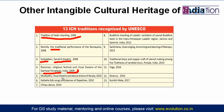Mudiyettu is a dance and drama of Kerala that also received intangible cultural heritage status. Kalbeli folk songs and dance of Rajasthan — the black-clad women dancing with matkas — also received the status. Chau dance of Jharkhand, Odisha, and Bengal was recognized as well. Buddhist chanting of Ladakh also received the status. Sankirtana, the ritual singing, drumming, and dancing of Manipur, got UNESCO intangible cultural heritage status in 2013.